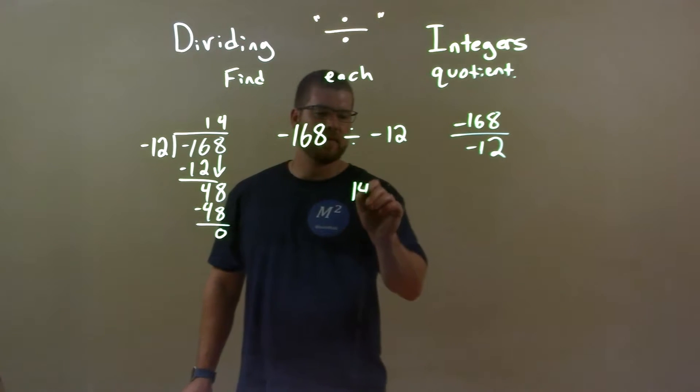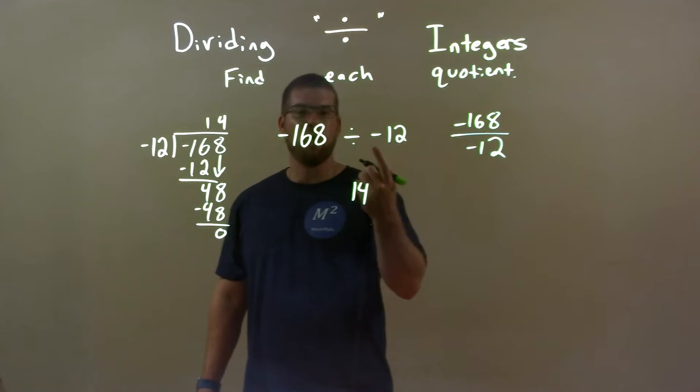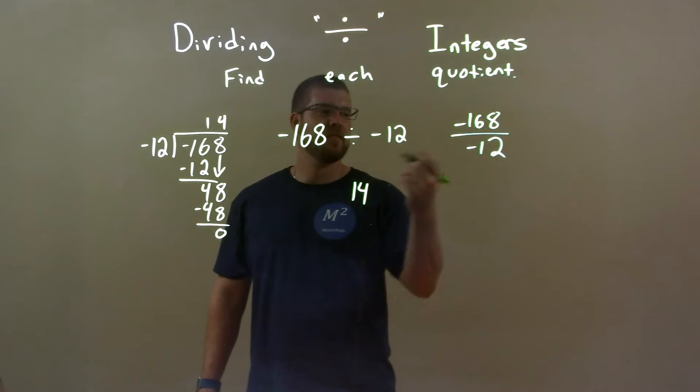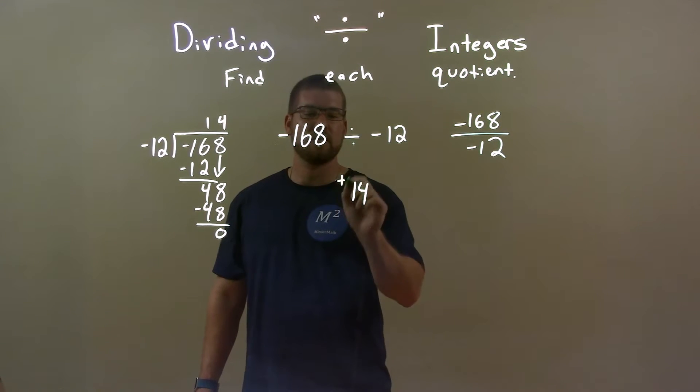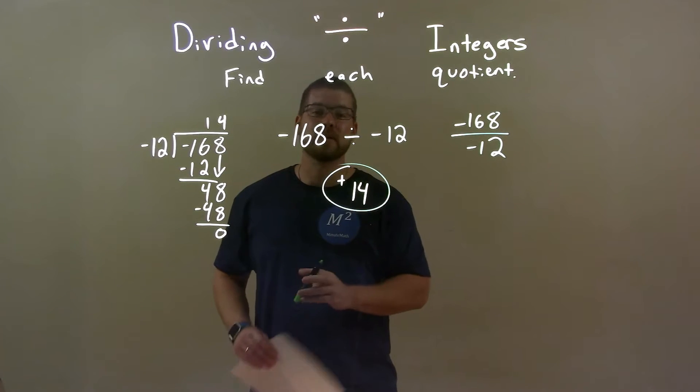We have 14 as the basis, but now we have to worry about the negatives. A negative divided by a negative is always a positive, and so our final answer here is just a positive 14.